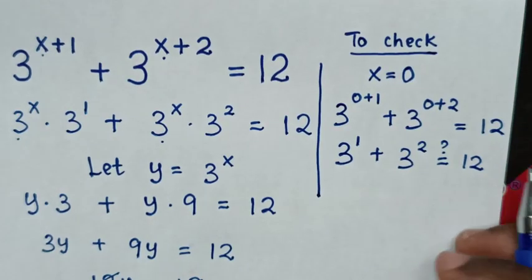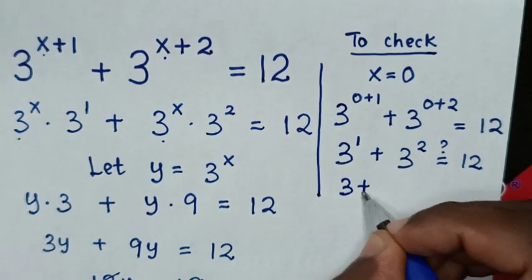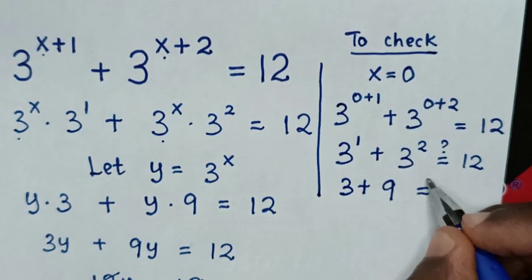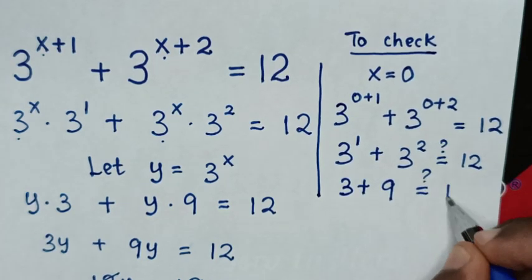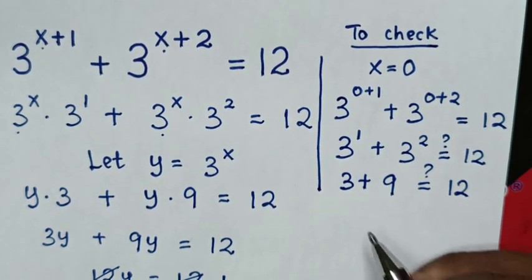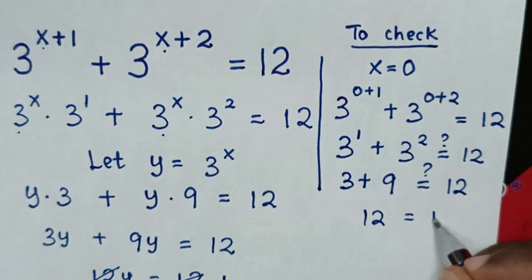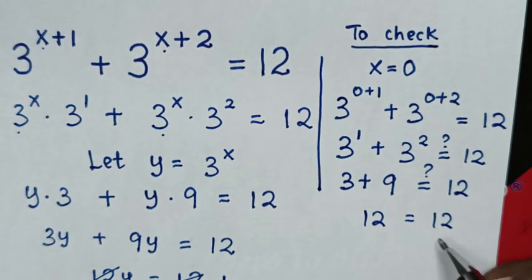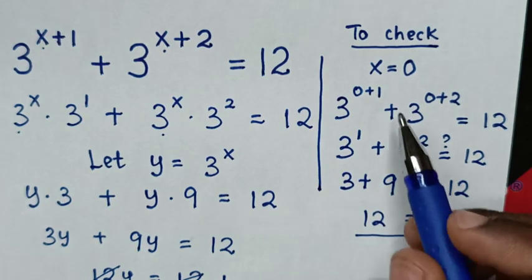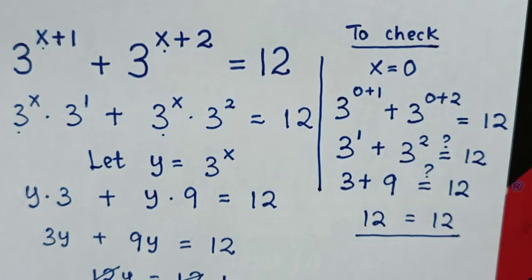From 3^1 is 3, plus 3^2 is 9. Is it equal to 12? Then 3 plus 9 is 12 — is it equal to 12? Yes, the left side and right side are equal, therefore it's true for the value of x equal to 0.